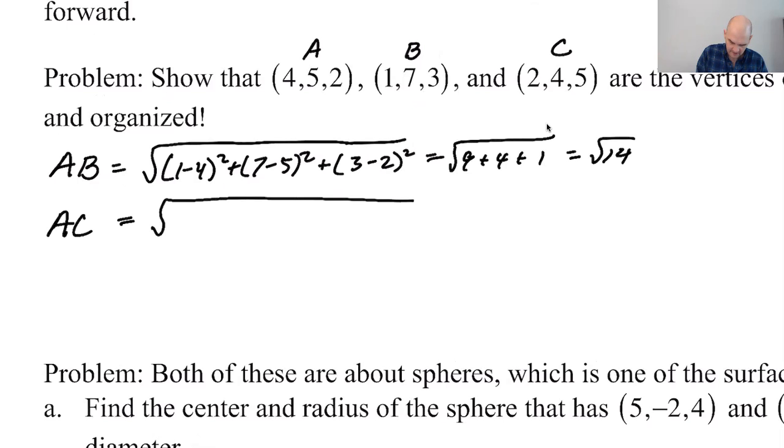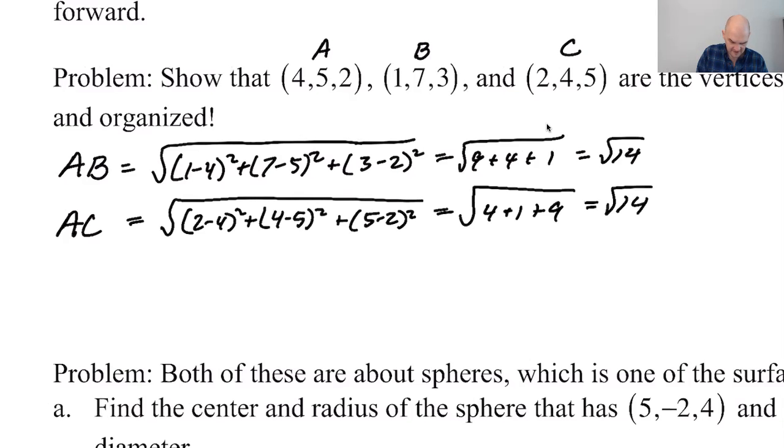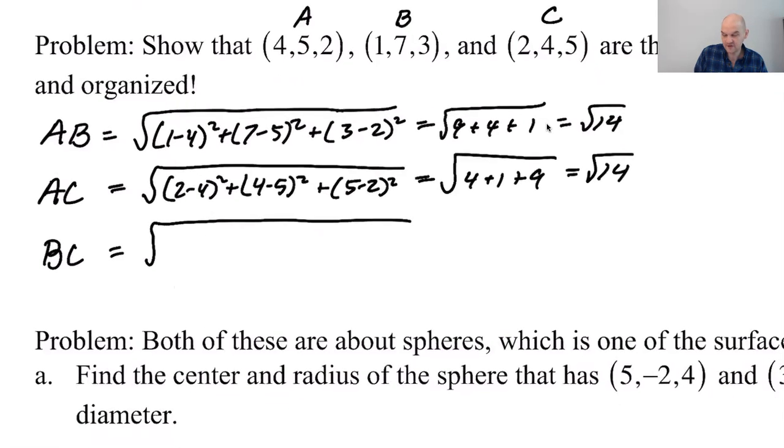We don't need to go crazy simplifying. We just need to show that all three of these are the same. So AC equals square root of (2-4)² + (4-5)² + (5-2)², which is 4 + 1 + 9. Without simplifying, we already know it's the same. Now we know it's an isosceles triangle.